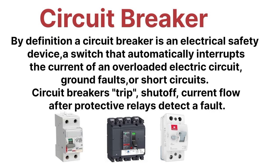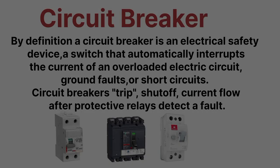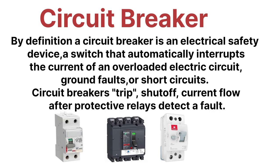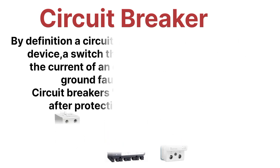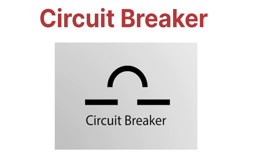A circuit breaker is generally used to protect the system from overcurrent and to prevent the risk of fire in homes or industries. The circuit breaker trips or sets off when the protective relay detects a fault. Whenever a fault is detected by the relay, the circuit breaker suddenly trips. The fault may be due to a ground fault or a short circuit fault. Here you can see the symbol for the circuit breaker.